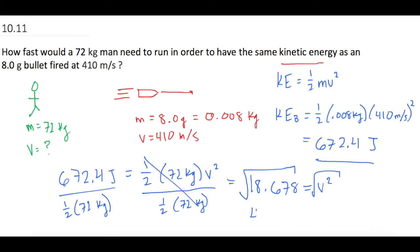And that gives us 4.32 meters per second that that guy has to run in order to have the same kinetic energy as that bullet.